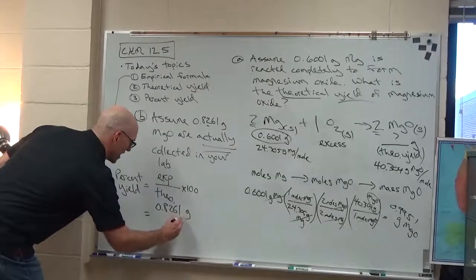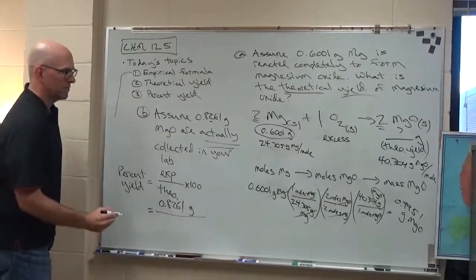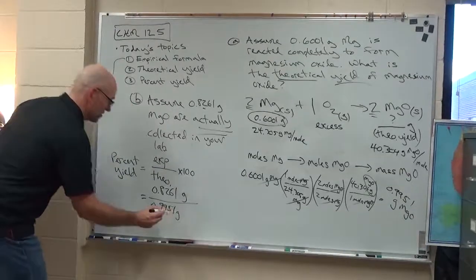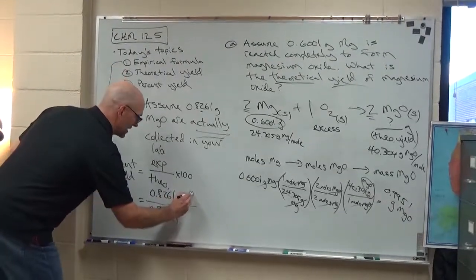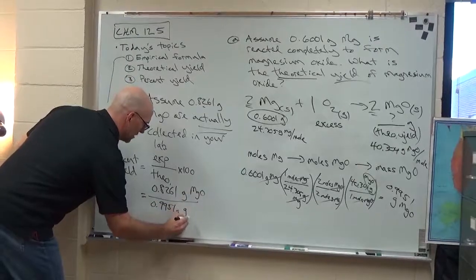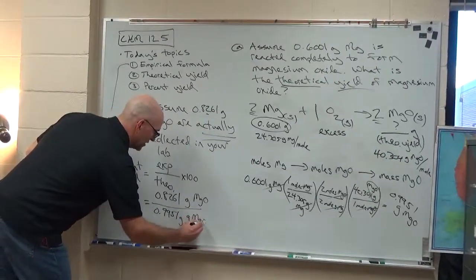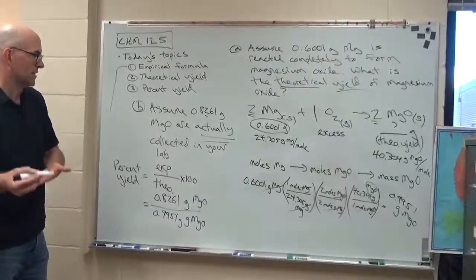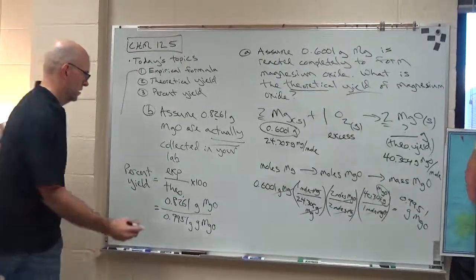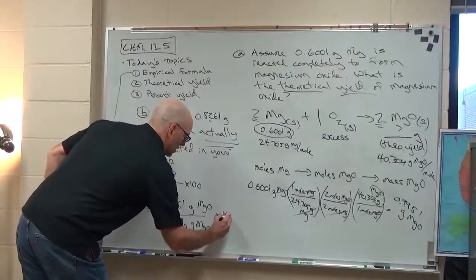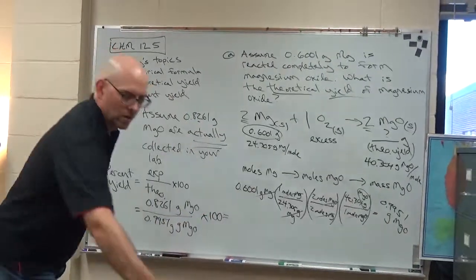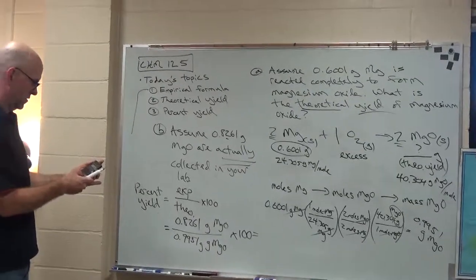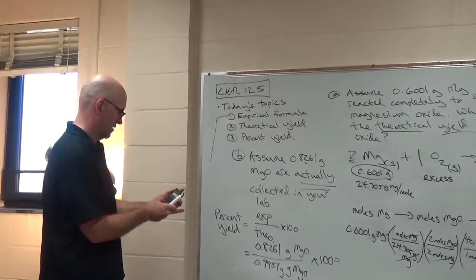So 0.8261 grams divided by 0.9951 grams. As opposed to make that point, it's grams of magnesium oxide over grams of magnesium oxide. Because if you're calculating a percentage, the units have to cancel. Percentages are unitless numbers.